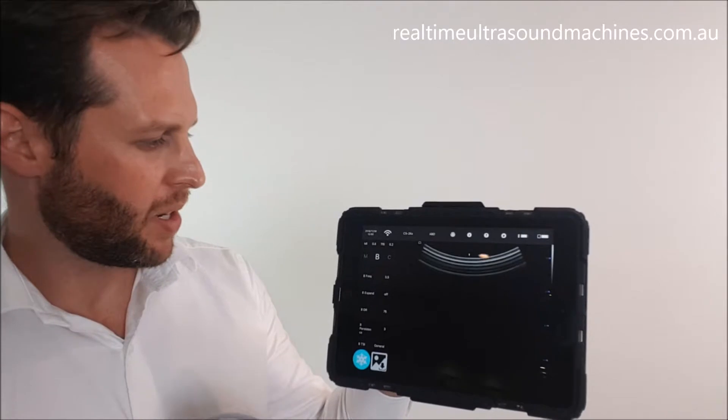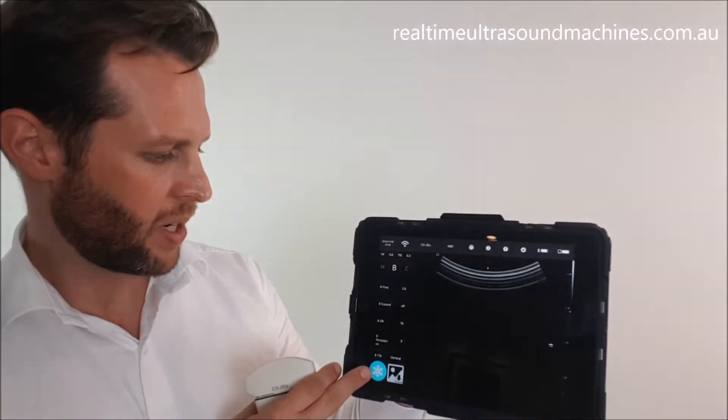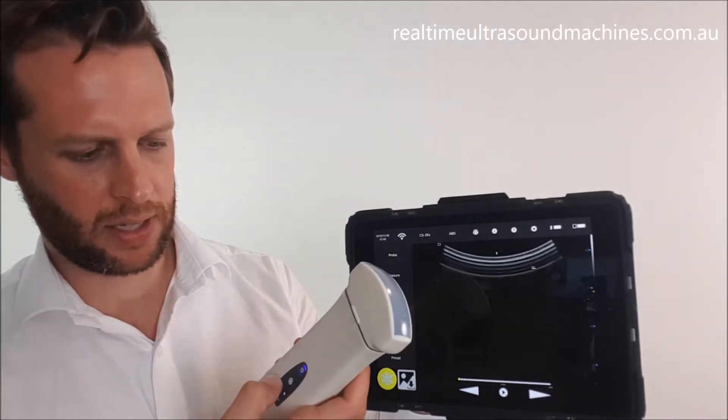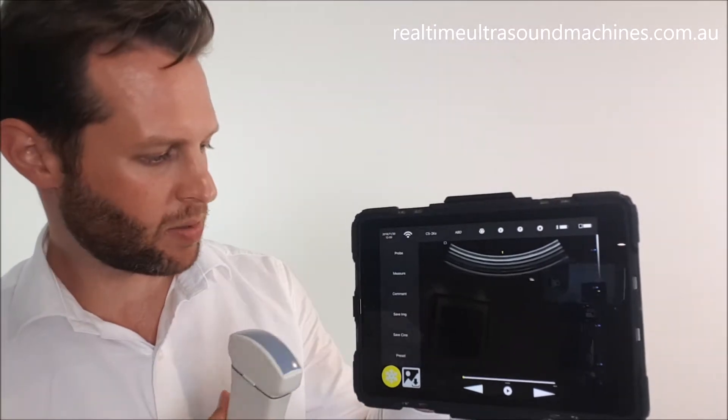If we want to do a measurement or add a comment, we need to freeze the image. We can do that by pressing the freeze button. Another thing you can do is use your ultrasound machine itself - if you're not able to reach the device, just press the power on-off button once and that will freeze it and bring up our menu. You can also use these buttons to select from the various menus.